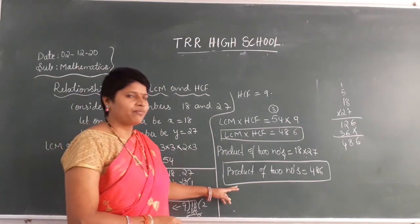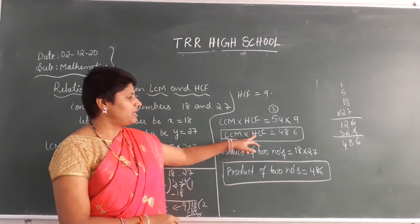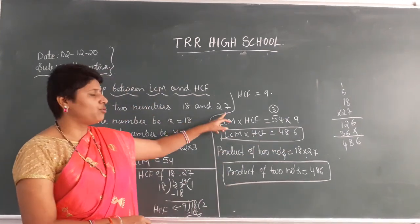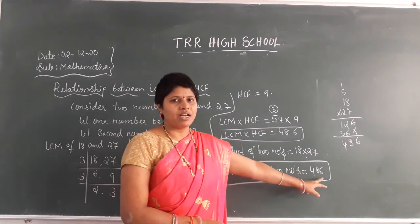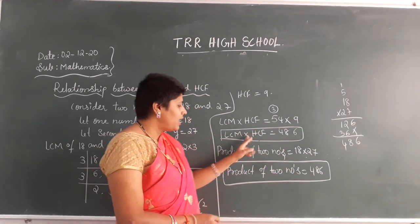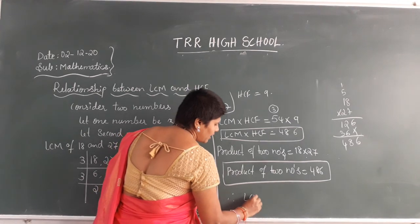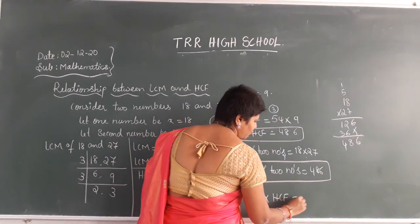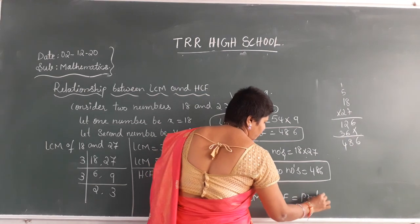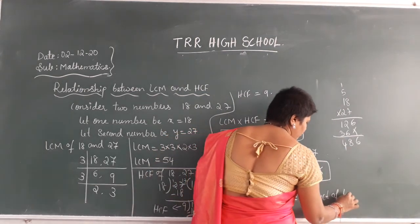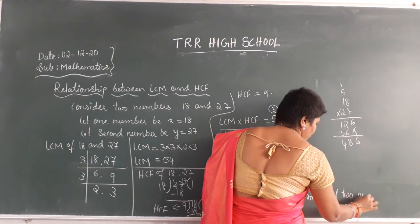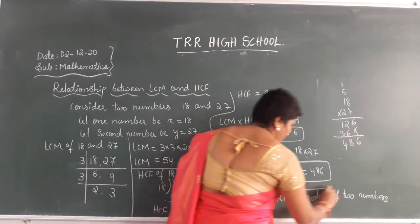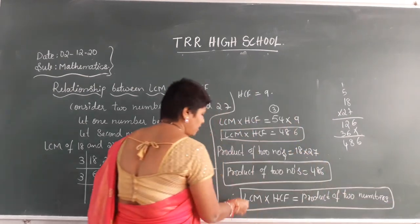Now observe these two results. When you multiply LCM and HCM, you get 486. And when you multiply the given 2 numbers, you also get the same answer, 486. So that means LCM into HCM is equal to the product of 2 numbers. This is your relationship.